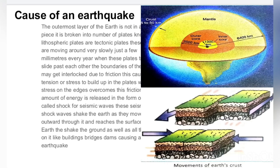The cause of an earthquake relates to the earth's structure. We know the earth has three layers: the crust, the mantle, and the core. The crust is the outermost layer, then comes the mantle, and the innermost is the molten core. Scientists believe that the earth is not made up of a single layer but consists of a number of plates.